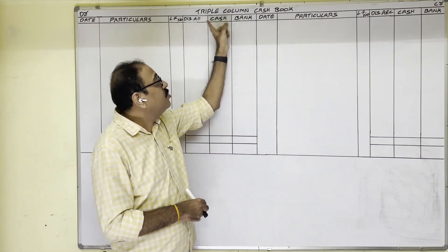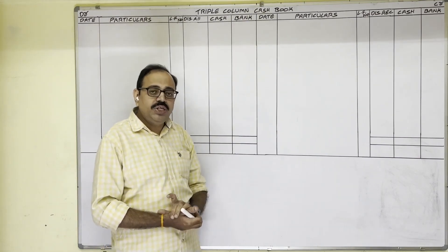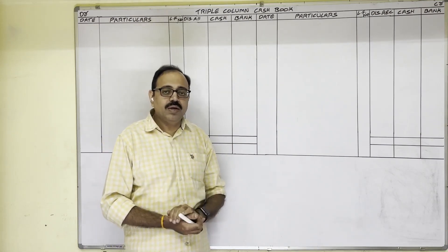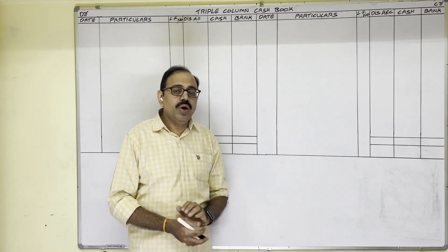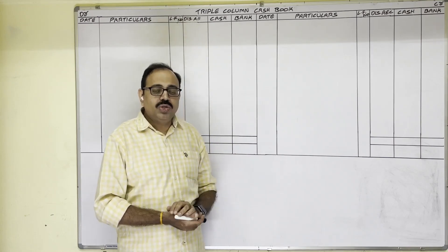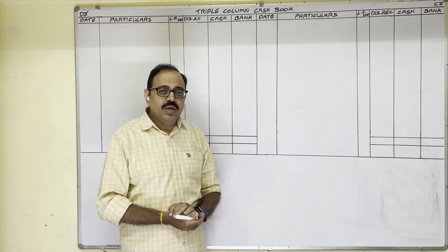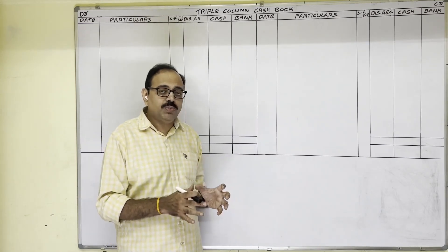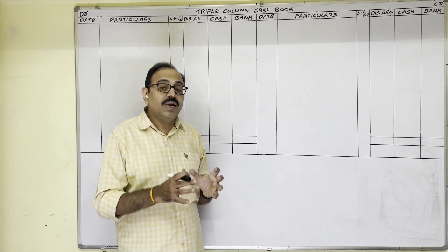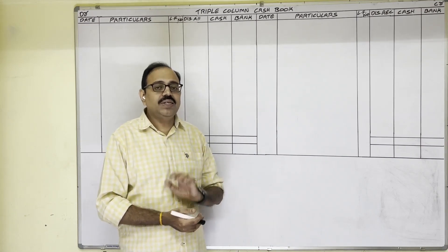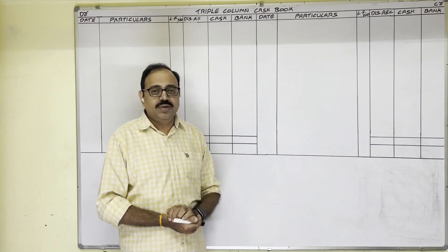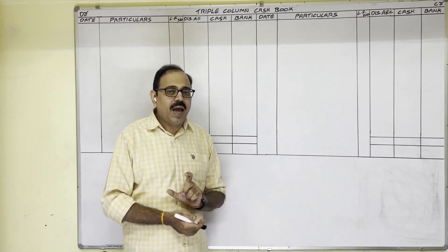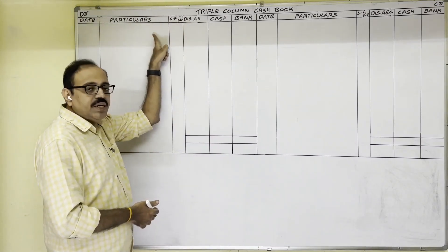This table is known as the triple column cash book. In the question, the first two sentences give the opening balances: cash at bank and cash in hand. Cash in hand means the cash balance in the firm's cash box on the starting date of the month. This is an asset, so it shows a debit balance. Therefore the opening cash balance is always written on the debit side.